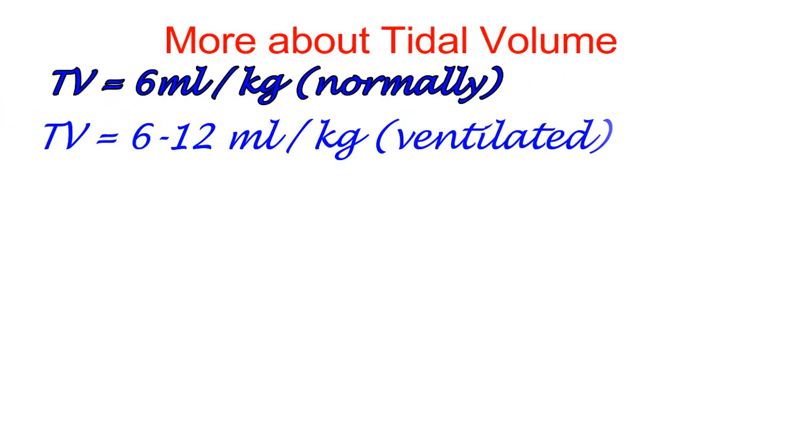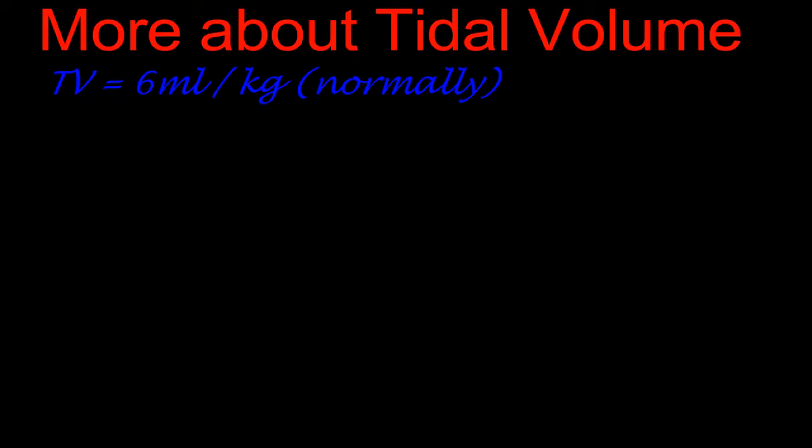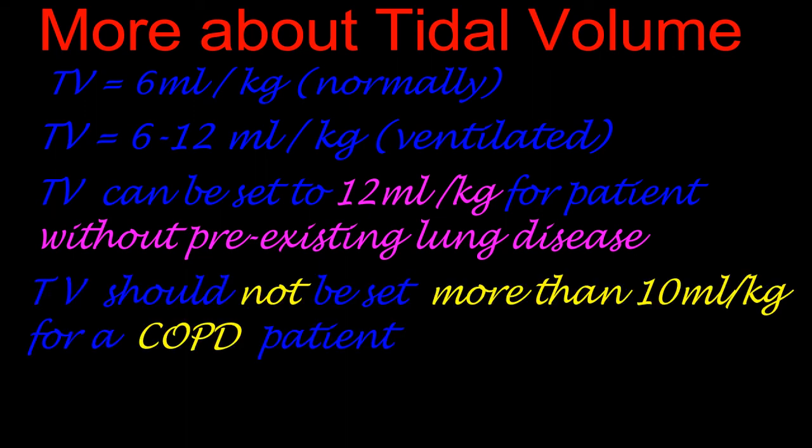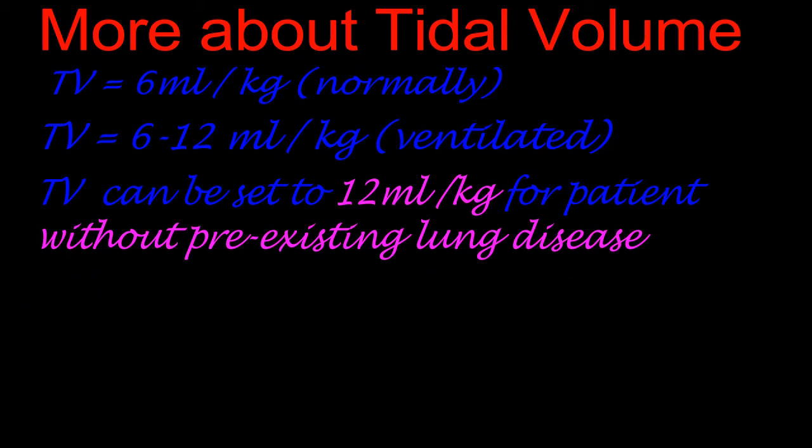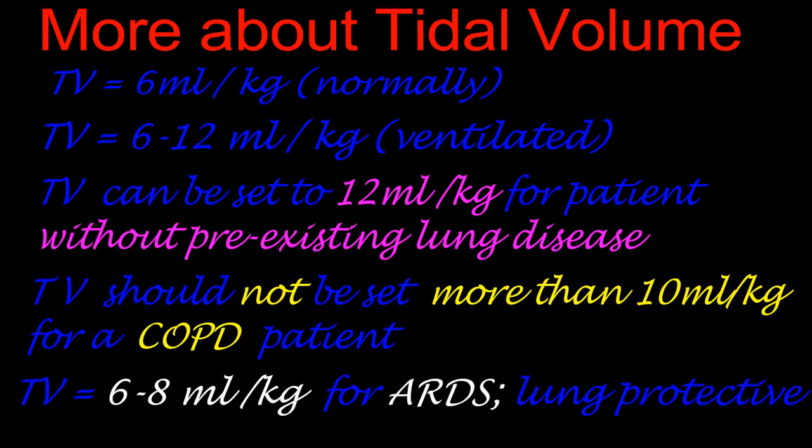Wait! There are more things to know about tidal volume. Tidal volume is 6 ml per kg for healthy adults with normal physiology. Tidal volume can be set from 6 to 12 ml per kg for patients in a ventilator. Tidal volume can be set to 12 ml per kg for patients without pre-existing lung disease. Tidal volume should not be set more than 10 ml per kg of predicted body weight for patients with COPD. Tidal volume is set at 6 to 8 ml per kg of predicted body weight in patients with ARDS, and it is the lung protective strategy. It is also the mostly used tidal volume setting for almost all ventilator patients.